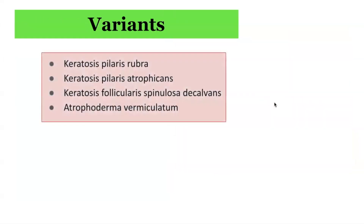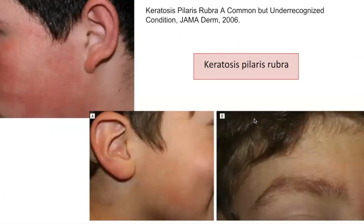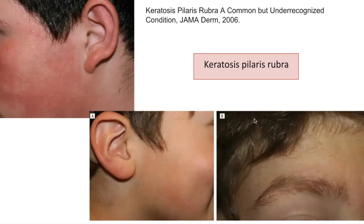There are a number of variants of keratosis pilaris that have been described. These include keratosis pilaris rubra, keratosis pilaris atrophicans, keratosis follicularis spinulosa decalvans, and atrophoderma vermiculatum. Keratosis pilaris rubra is a variant with more prominent erythema and more widespread areas of skin involvement in some cases, but without the atrophy or hyperpigmentation noted in certain keratosis pilaris variants. It seems to be relatively common, but an uncommonly reported condition.